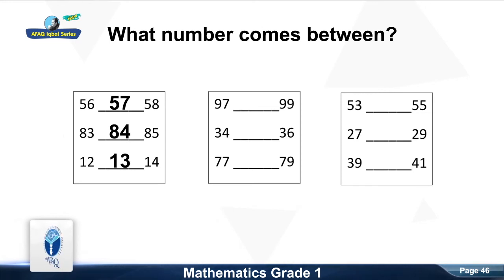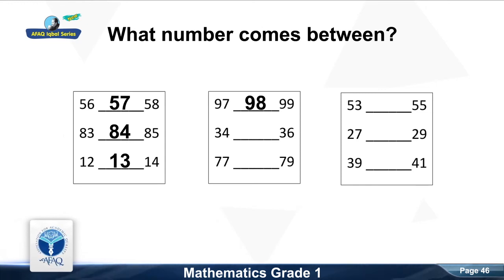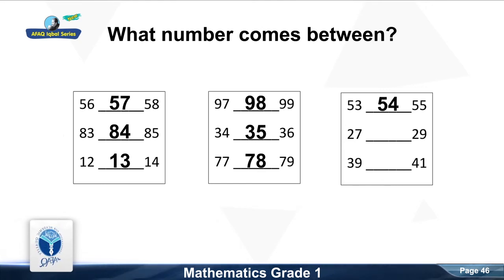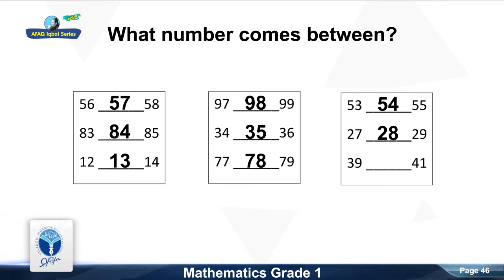What number comes between ninety-seven and ninety-nine? Good, ninety-eight. What number comes between thirty-four and thirty-six? Good, thirty-five. What number comes between seventy-seven and seventy-nine? Good, seventy-eight. What number comes between fifty-three and fifty-five? Good, fifty-four. What number comes between twenty-seven and twenty-nine? Good, twenty-eight. What number comes between thirty-nine and forty-one? Good, forty.